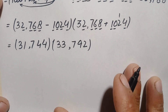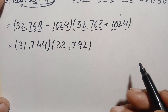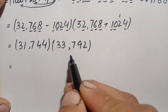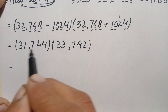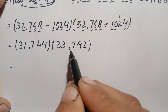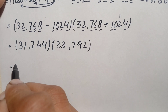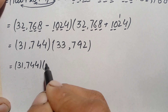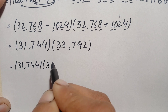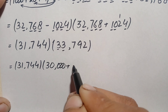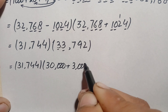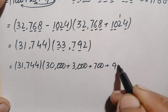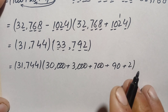Now we multiply 31,744 times 33,792 without a calculator. We keep 31,744 as is and break 33,792 into place values: 30,000 plus 3,000 plus 700 plus 90 plus 2. We then multiply 31,744 by each part separately.